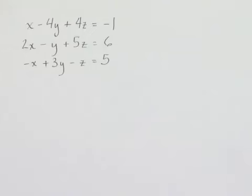Solve the system using matrices. Our first equation is x minus 4y plus 4z equals negative 1. Our second equation is 2x minus y plus 5z equals 6. And our third equation is negative x plus 3y minus z equals 5.